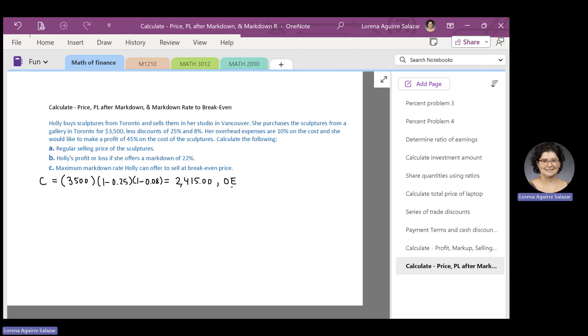Overhead expenses, also known as operating expenses, are expenses such as salary, rent, utilities, insurance, advertising, etc., that are necessary to operate the business. Overhead expenses here are written in terms of the cost. We have that Hoed's overhead expenses are 10% of the cost.